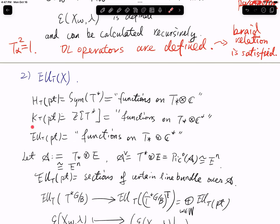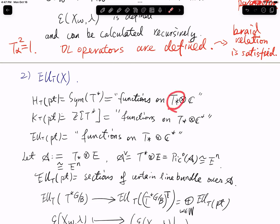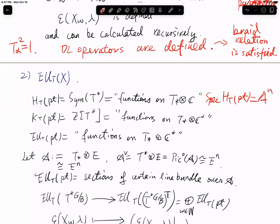Similarly, for K-theory it is the group ring, which you can think of as functions over the torus. In the cohomology case, taking the spectrum gives you an affine space; in K-theory, taking the spectrum gives you the torus. So for the elliptic version, you look at functions over an elliptic curve E, which you fix at the beginning. Taking the spectrum gives T_* ⊗ E, which we call A — it is isomorphic to E^r, where r is the rank of the torus.